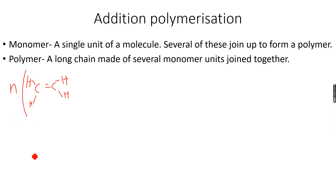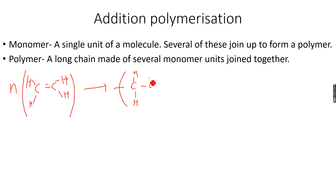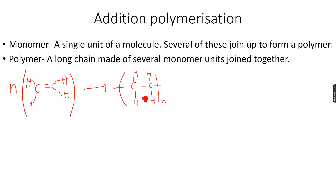They are joined together to form a polymer of N units, so this polymer is N units long. These bonds on the right and left are called continuation bonds, just to show that the molecule is continuing on both sides. This is the repeat unit of the polymer. The monomer was ethene and the polymer was polyethene.